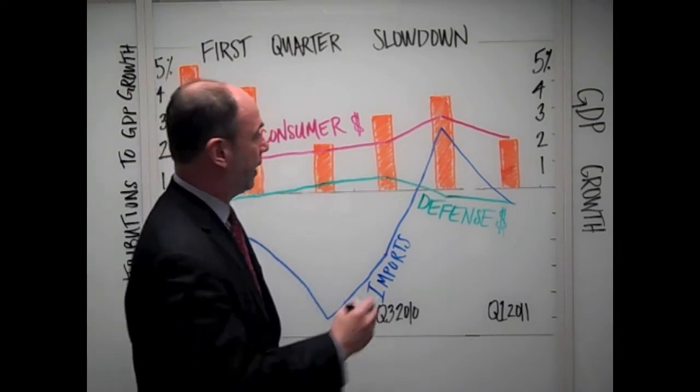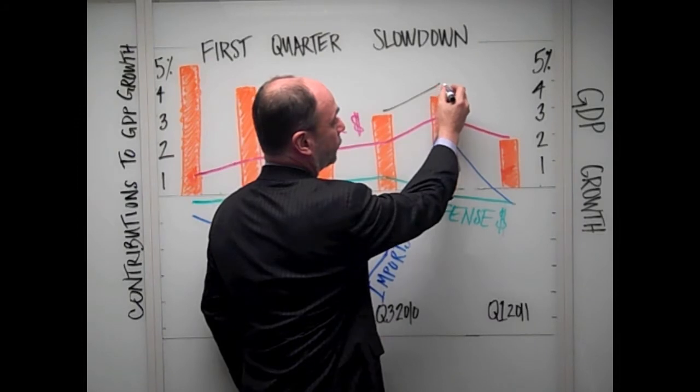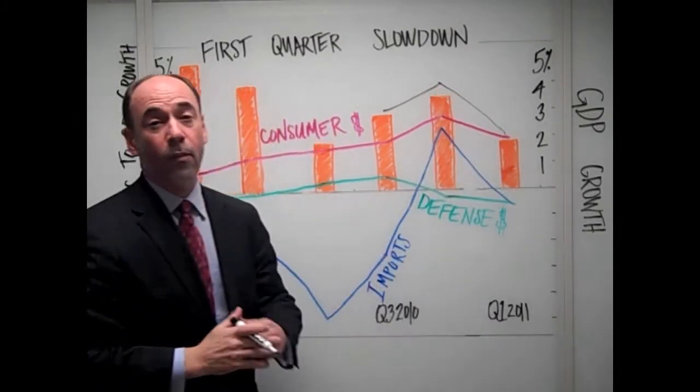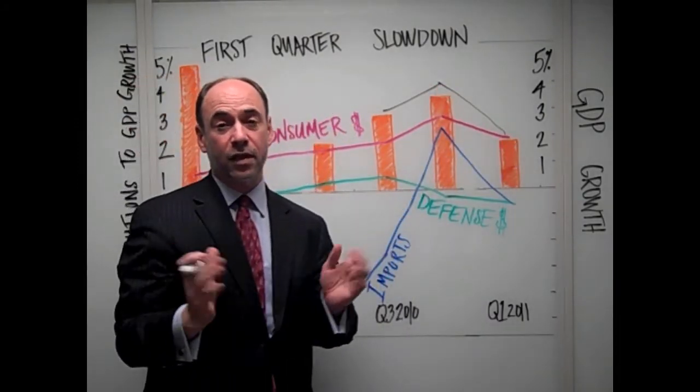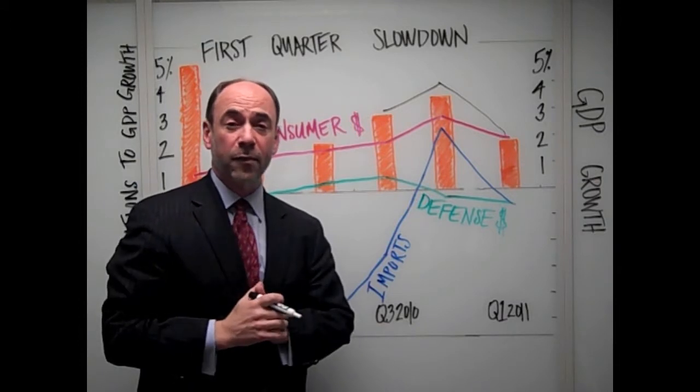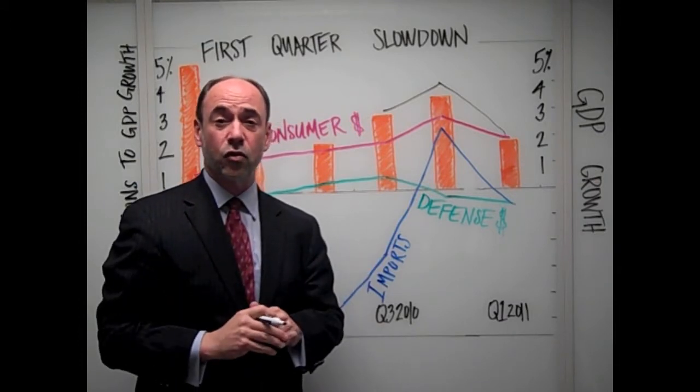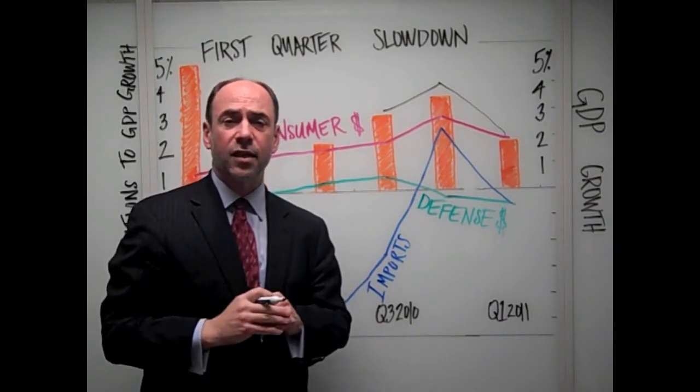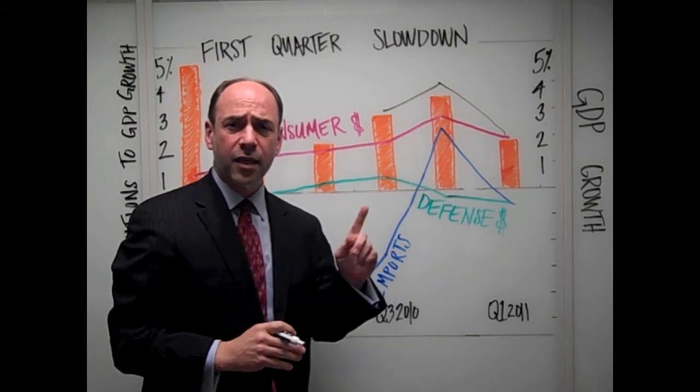Americans have heard the bad news about the growth slowdown after going up in the fourth quarter of 2010. We saw it drop to 1.8% in the first quarter of 2011. They've also heard the Obama administration's top economist, Austin Goolsbee, say that the real reason is a decline in federal defense spending. Let's take a look at that.